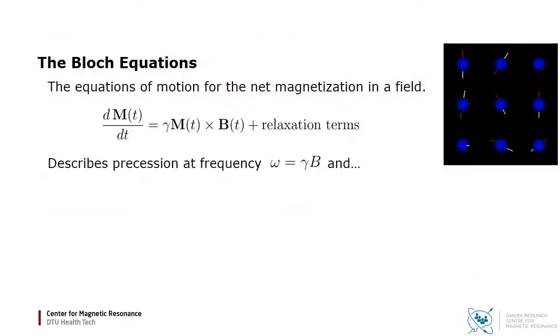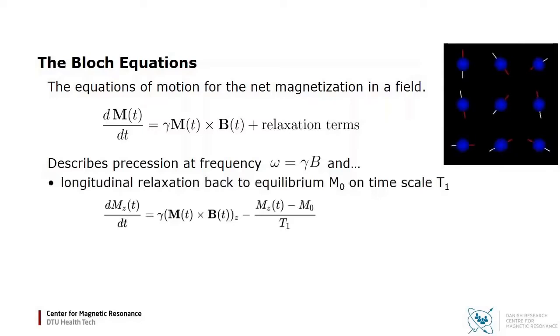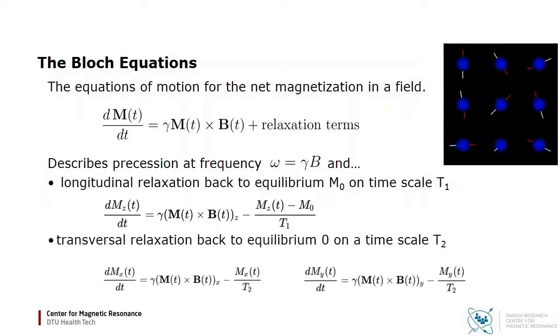Hence, we end up with the Bloch equations describing precession at the Larmor frequency proportional to the field strength, and on a longer timescale, there is longitudinal relaxation back towards equilibrium M0 on a timescale of T1, and transversal relaxation back to a different equilibrium of 0 on a timescale of T2.